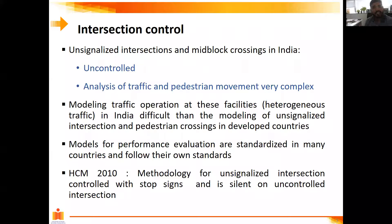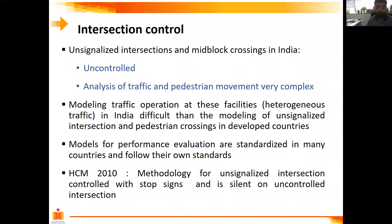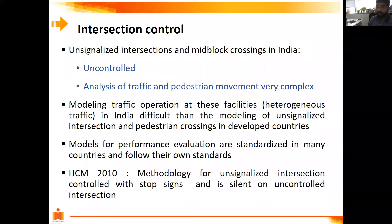If you look at modeling traffic operation at these facilities, since traffic is heterogeneous and mixed in condition, it is quite difficult compared to unsignalized intersections which are standard in most foreign countries. Models for performance evaluation are quite standardized in many countries. For example, the Highway Capacity Manual — a well-known manual developed in the US, with the 2010 version being the latest — gives a proper methodology for unsignalized intersections controlled with stop signs. However, it does not speak about uncontrolled intersections. It talks about signalized intersections and stop-controlled intersections, but is completely silent on uncontrolled intersections where there is no control at all.